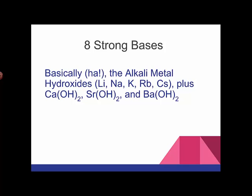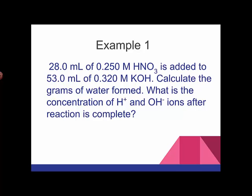So here's an example of how we would use acid-base reactions in a type of problem, stoichiometric type problem. So we've got 28 milliliters of nitric acid. Concentration is 0.250. And we're adding that to 53 milliliters of potassium hydroxide, a strong base, which has a molarity of 0.320. And we want to know how many grams of water are going to form, because it's neutralization, so we're going to form water.